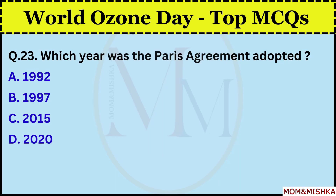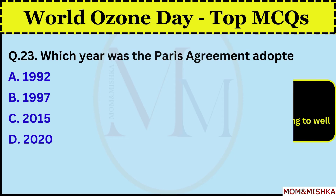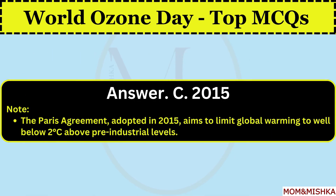Which year was the Paris Agreement adopted? In 2015. Option C. The Paris Agreement, adopted in 2015, aims to limit global warming to well below 2 degrees above pre-industrial levels.